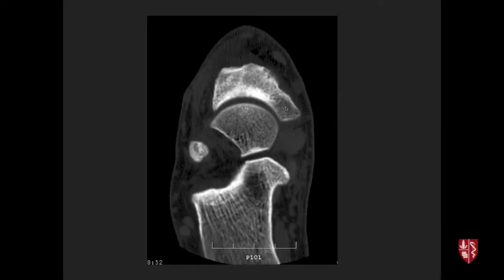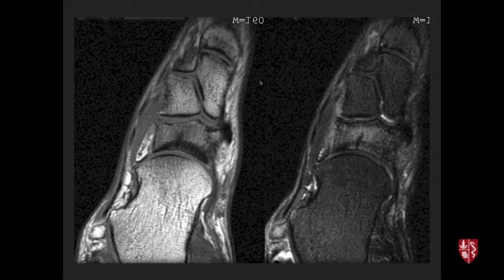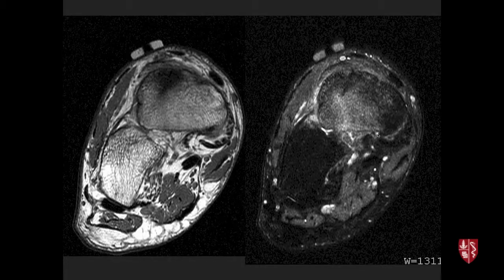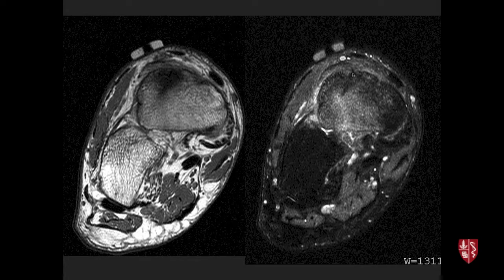The tarsal navicular is a high-risk stress injury site because a complete fracture can split the bone apart leading to an orthopedic disaster. CT may show only subtle sclerosis without a lucent gap, but MRI on the same day clearly demonstrates edema within the navicular with a low-signal fracture line. Navicular stress fractures are almost always parasagittally oriented — vertically along the dorsal surface — which is the classic location.